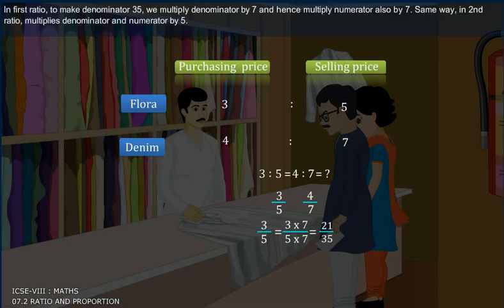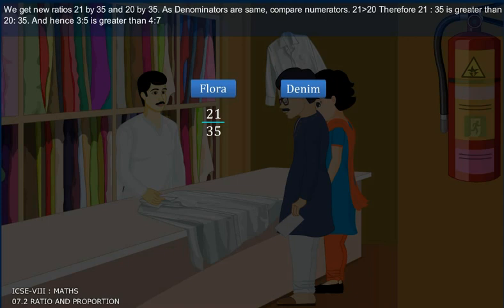In first ratio, to make denominator 35, we multiply denominator by 7. And hence, multiply numerator also by 7. Same way, in second ratio, multiply denominator and numerator by 5. We get new ratios 21 by 35 and 20 by 35.